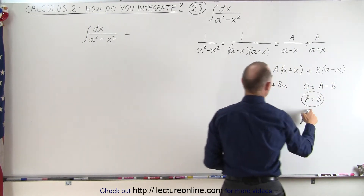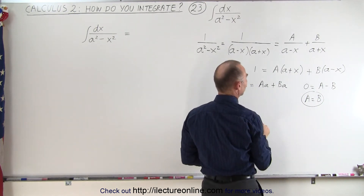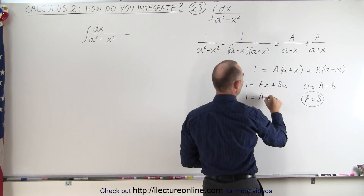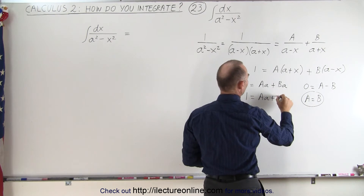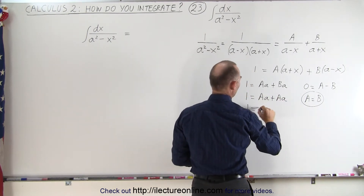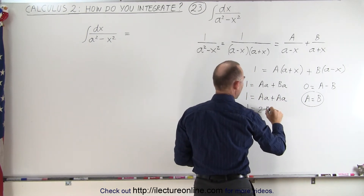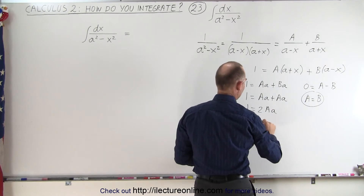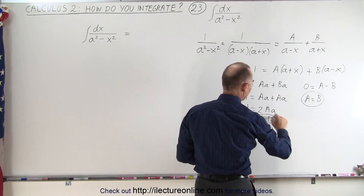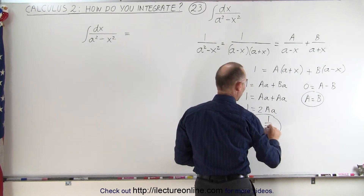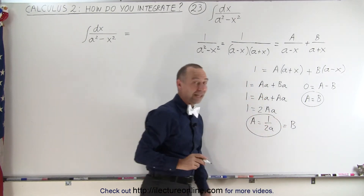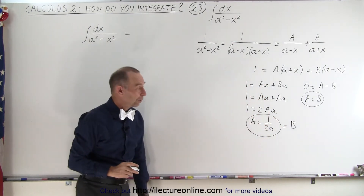Since A is equal to B, we can plug that in. So 1 equals A times a plus A times a, which gives us 1 equals 2Aa, or A equals 1 over 2a. Since A equals 1 over 2a, that means B is also equal to 1 over 2a, since A and B are equal to one another.